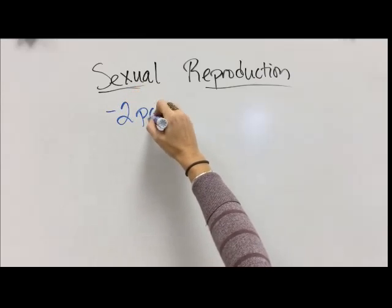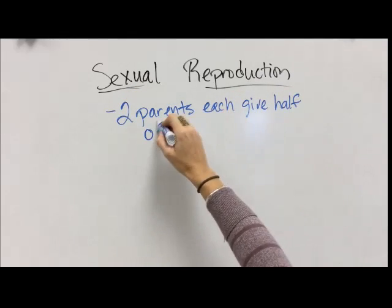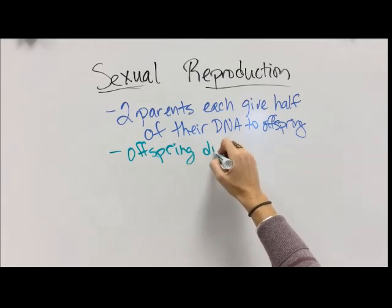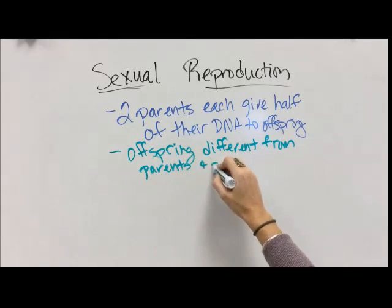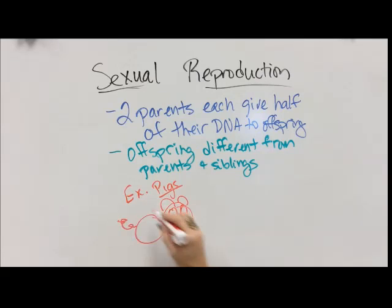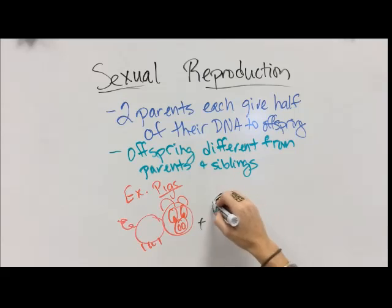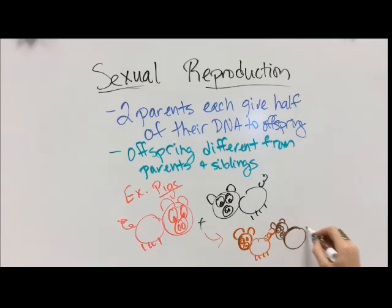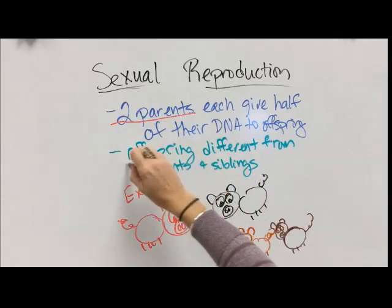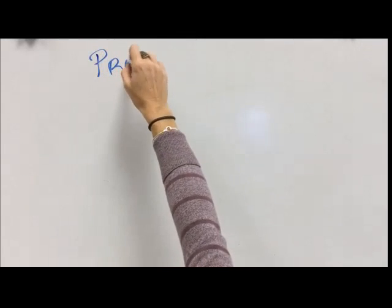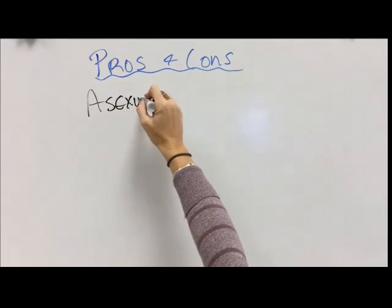Two parents are involved in sexual reproduction. They each give half of their DNA to the offspring. Because of that, the offspring are different from their parents and also different from any siblings, because everybody's getting different DNA. For example, let's say we have a little pink mama pig — that's red because I'm using a pink marker — and then a black daddy pig on this side, because yes, there are black pigs. We get them to breed and we get a cute little brown pig — kind of looks like a mouse, sorry, I got the ears all weird — and then a little dark brown pig, which is totally possible in the pig family. These two parents have offspring that are different from each other and also different from them.